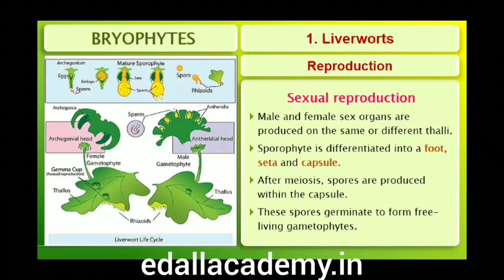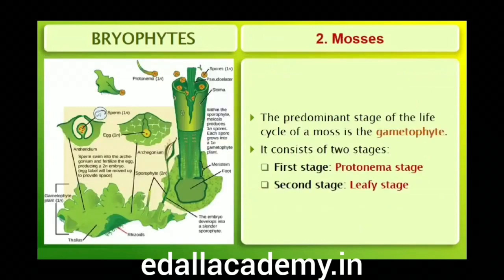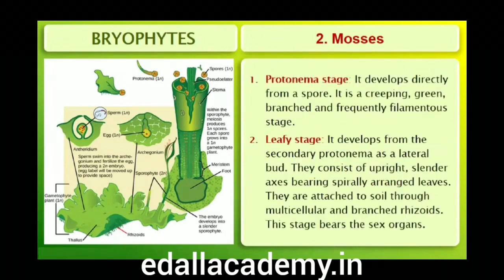These spores germinate to form free-living gametophytes. The predominant stage of the life cycle of moss is the gametophyte, which consists of two stages. The first stage is the protonema stage, which develops directly from a spore. It is a creeping, green, branched and frequently filamentous stage. The second stage is the leafy stage, which develops from the secondary protonema as a lateral bud.